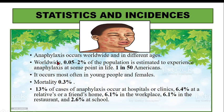Regarding statistics and incidence: anaphylaxis occurs worldwide at all ages. Globally, 0.05 to 2 percent of the population experience anaphylaxis at some point. One in 50 Americans experience it; it usually occurs in young people and females. Mortality is 0.3 percent. Of anaphylaxis cases, 13 percent occur in hospitals due to drug reactions, 6.4 percent at friends' or relatives' homes, 6.1 percent in workplaces, 6.1 percent in restaurants, and 2.6 percent in schools.